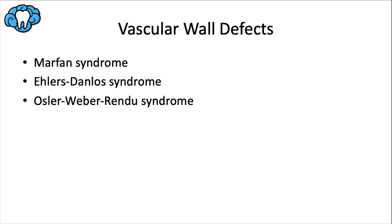The vascular phase is our first step in hemostasis, so we'll appropriately start with vascular wall defects. Thankfully, this is not a big deal for dental care, and patients with these defects rarely have a severe bleeding episode after a tooth extraction. Marfan syndrome and Ehlers-Danlos syndrome affect connective tissue, which in turn affects the vascular wall. Osler-Weber-Rendu syndrome, also known as hereditary hemorrhagic telangiectasia, affects blood vessels more directly. All three of these can compromise the integrity of the vascular wall, impacting that first phase of hemostasis.